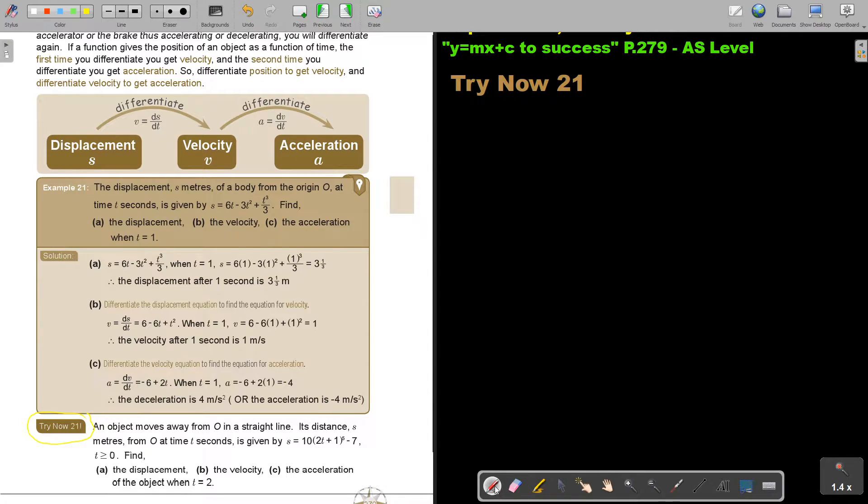Let's start with number A. An object moves away from O in a straight line. Its distance in meters from O at time t is given by this. Let's just first write the function down: s equals 10 times 2t plus 1 to the power of 5 minus 7.